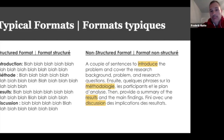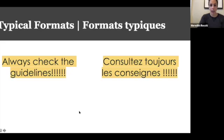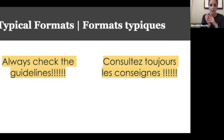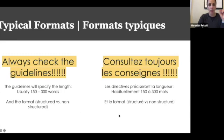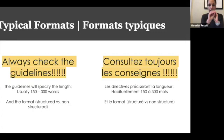Another thing to check when you're applying anywhere — whether it's a conference, your thesis, or a publication — is the specific guidelines for their résumés or abstracts. The number of times I've had a journal article come back rejected from the editor only to have to resubmit it again because I didn't follow their abstract guidelines is too many. So please actually check. That'll tell you how many words, whether there's a format, and if it's structured, which headings they want. Usually guidelines will specify something between 150 to 300 words. If it's 150 words, you're going to be very focused; if you have 300 words, you can actually elaborate a little bit.